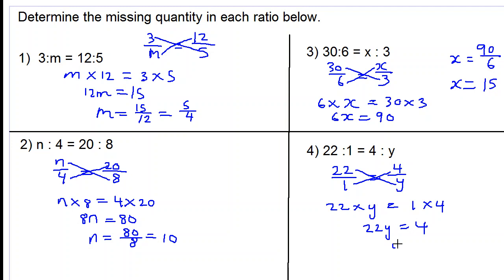And then we divide both sides by 22, so we get y is 4 over 22. We simplify this by dividing by 2 in the numerator and denominator. 2 into 4 is 2, 2 into 22 is 11. y is therefore 2 over 11.